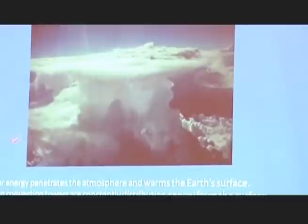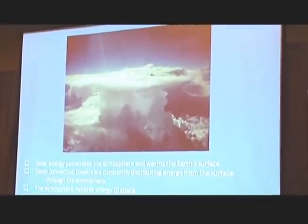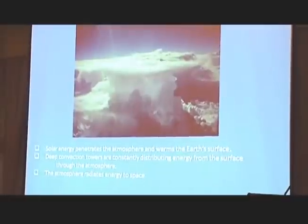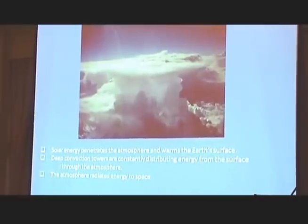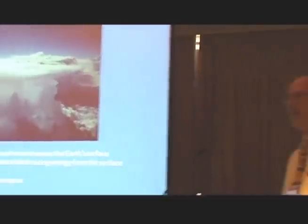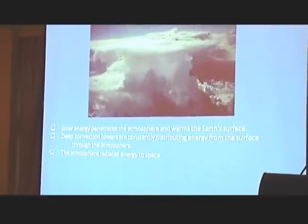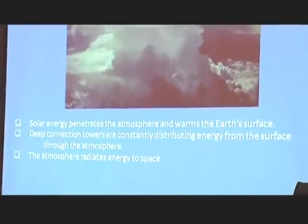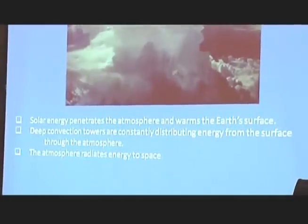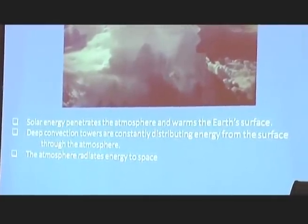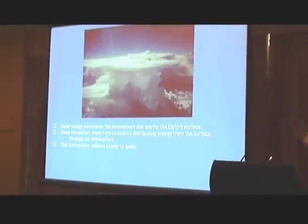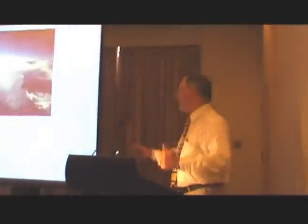What they pointed out was that there is, in fact, the latent and sensible heat exchange between the surface and the higher atmosphere. But this can't get to the higher levels, except by one way, and that's by deep convection. And so, it's deep convection that is transferring that heat and moisture from the boundary layer of the atmosphere through the atmosphere, so that we get this balance between the solar input at the surface and the net radiation loss from the atmosphere. Solar energy penetrates the atmosphere and warms the Earth's surface. Deep convection towers are constantly distributing energy from the surface through the atmosphere. Whenever you look outside and see a deep convection cloud, it's doing the job. It's keeping us cool at the surface. It's taking that heat and it's getting it up into the atmosphere to radiate to space. And the atmosphere radiates the energy to space.